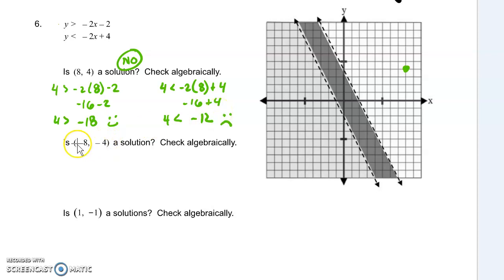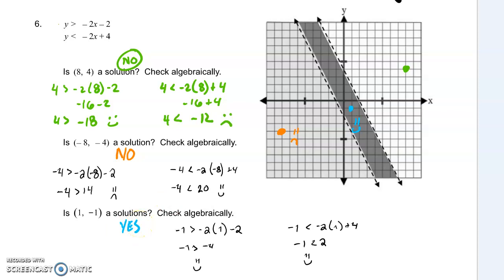Go ahead and check the second and third ordered pairs. So graphically, we can make our decisions just based on location. Negative 8, negative 4 is a no. It's not in that dark shaded area. And 1, negative 1 is, so it's a yes. So what does that look like algebraically?